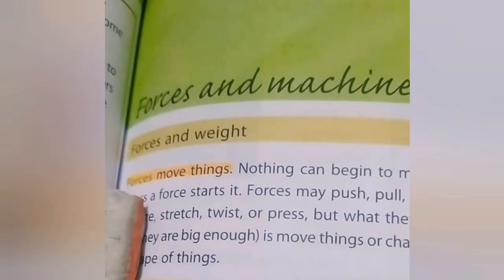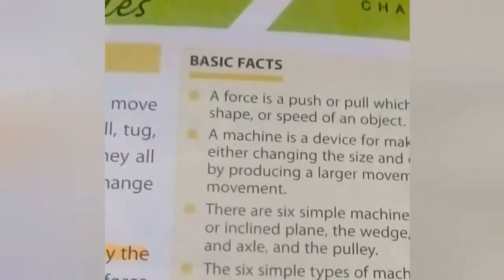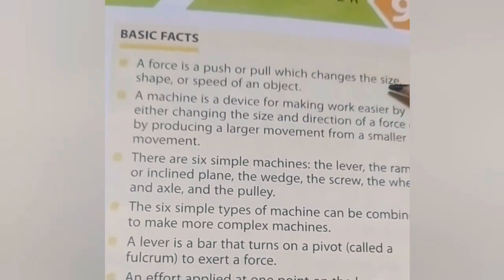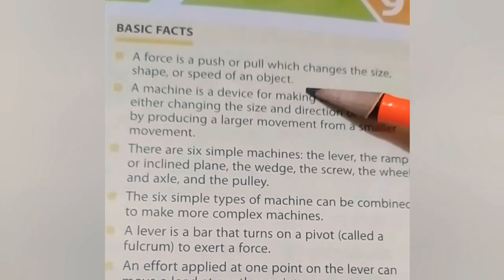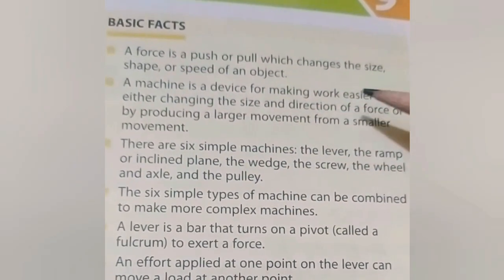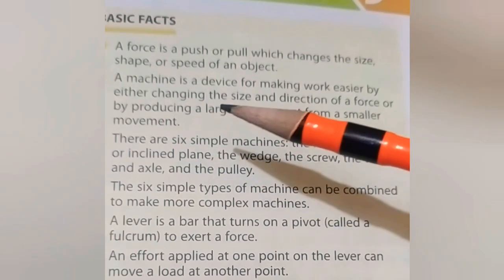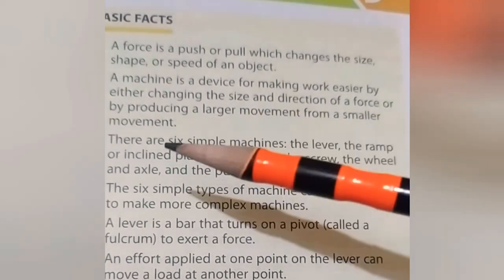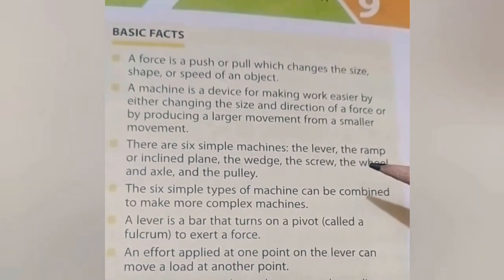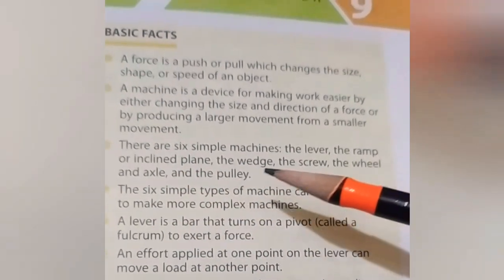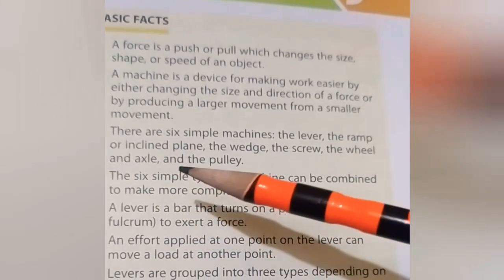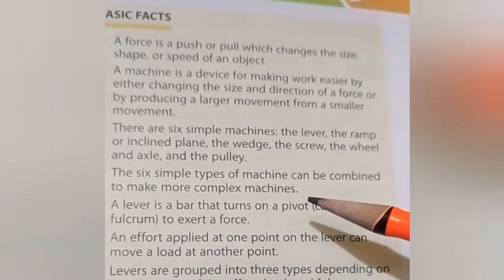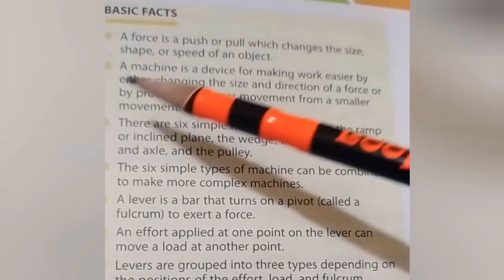In lecture number two of unit number nine, Forces and Machines, let us revise the basic facts. A force is a push or pull which changes the size, shape, or speed of an object. A machine is a device for making work easier by either changing the size and direction of a force or by producing a large movement from a smaller movement. There are six simple machines: the lever, the ramp or inclined plane, the wedge, the screw, the wheel and axle, and the pulley. These six simple types of machines can be combined to make more complex machines.